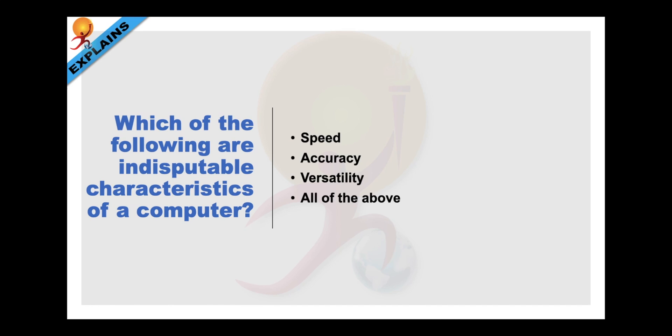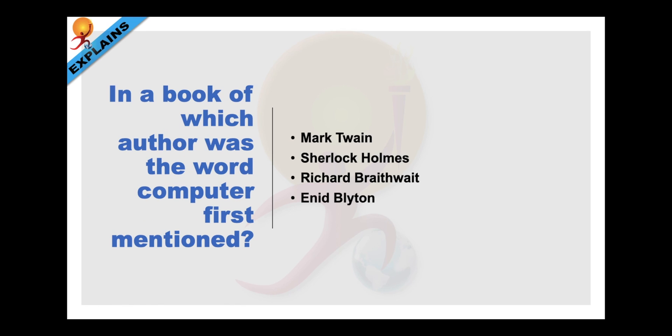Which of the following are indisputable characteristics of a computer? Speed, accuracy, versatility. Well, apart from these three, in addition, it also has reliability, storage, capacity thus making total of five characteristics. So answer is all of the above. And these are some of the factors which make it such an important part of our lives. In a book of which author was the word computer first mentioned?